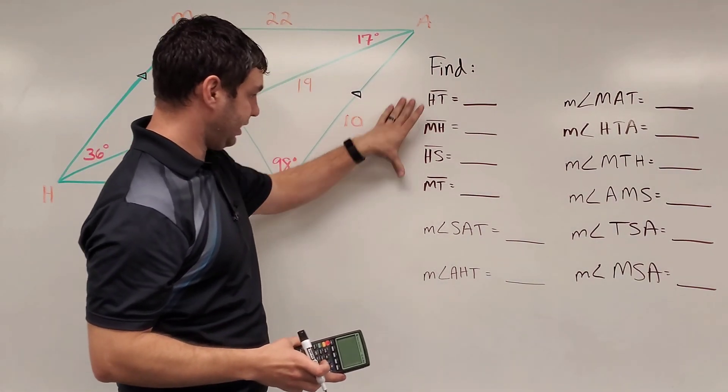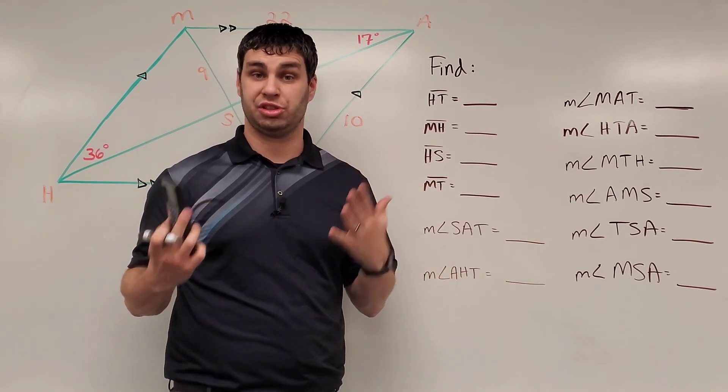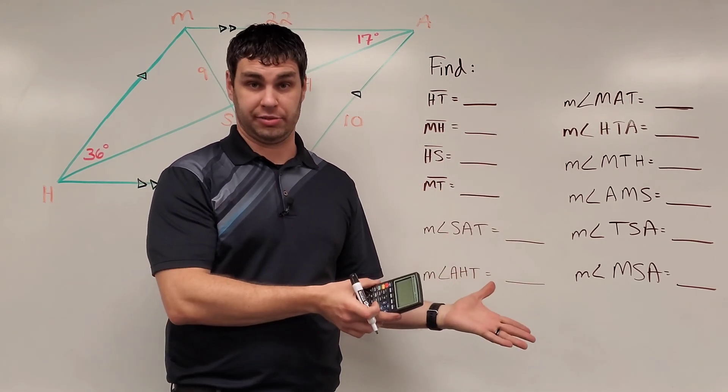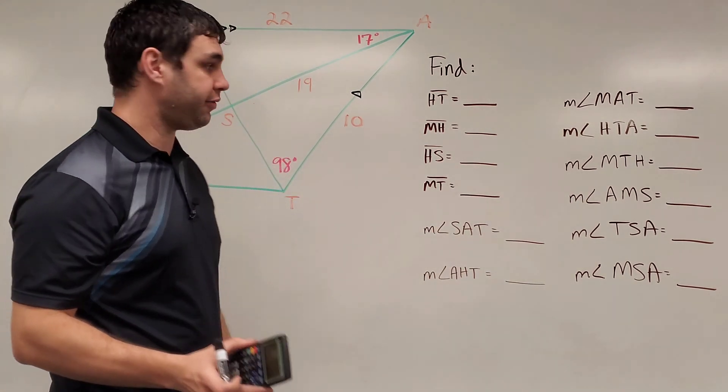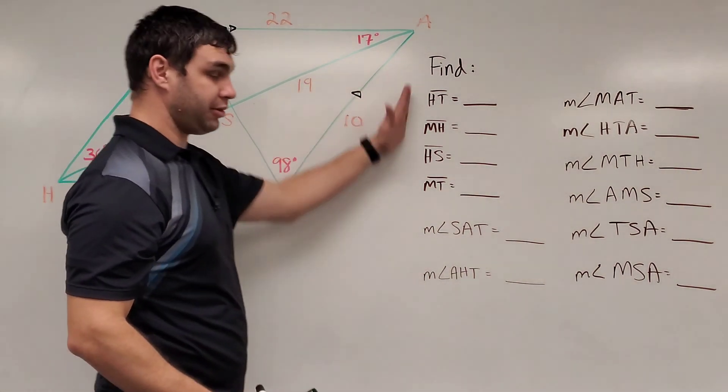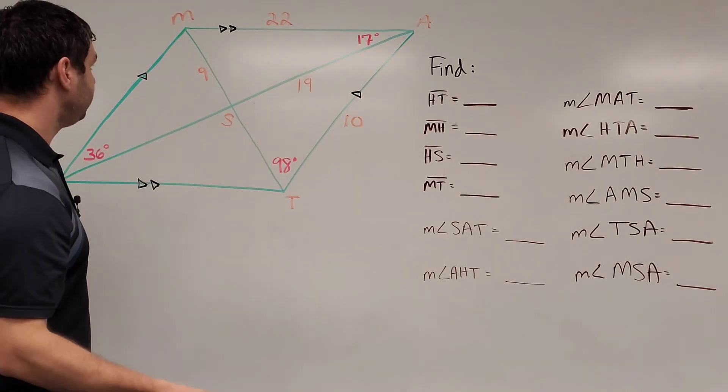And in this problem, it's wanting me to find some of these different missing lengths as well as some of these different missing angles. So essentially what it wants us to do is solve a whole parallelogram, meaning we're going to find all its missing angles, all its missing lengths. If I have everything, I should be able to fill out all of these. All right, let's try it. You might want to have a calculator handy as you do these problems.